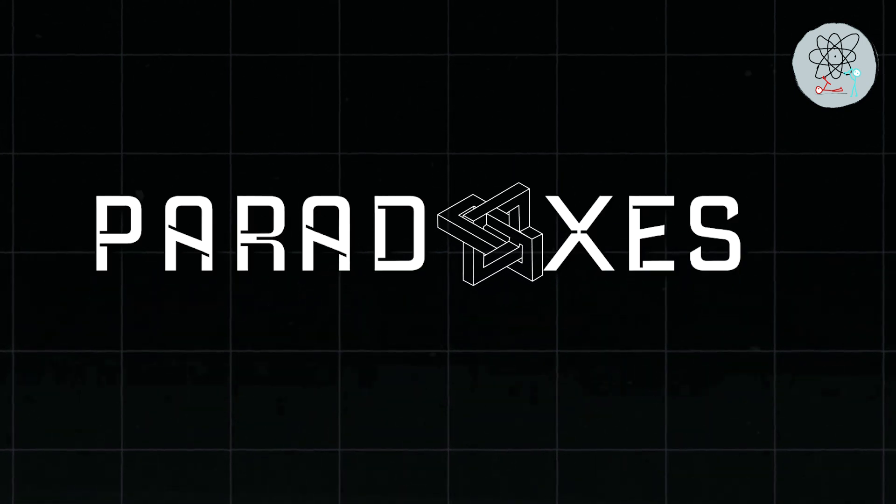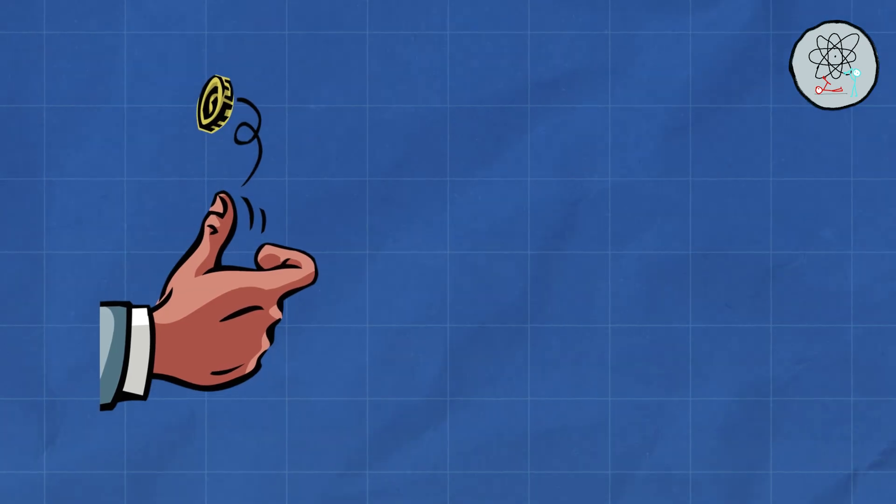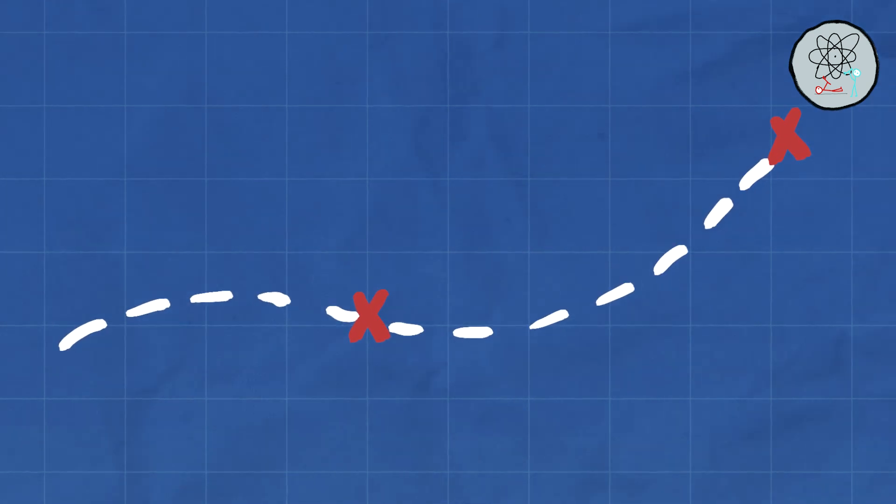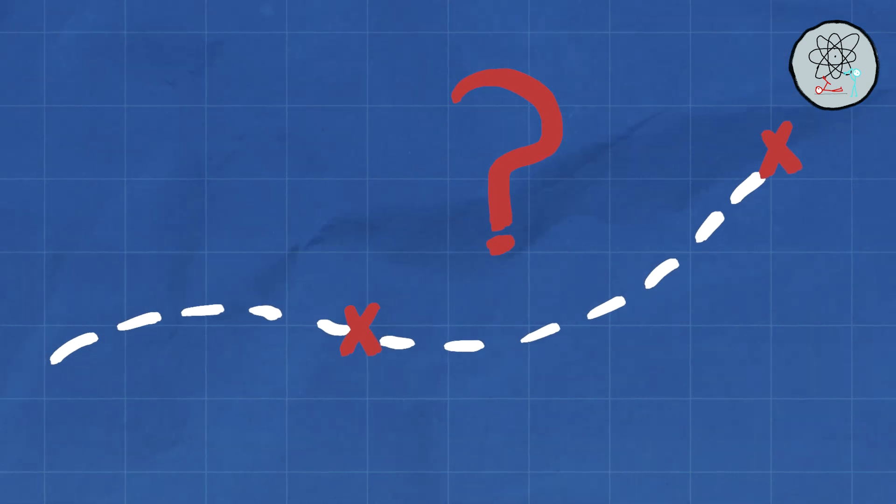This probabilistic nature of quantum mechanics means we can't predict the exact location or momentum of a particle, only the probability of finding it in a certain place or having a certain momentum.